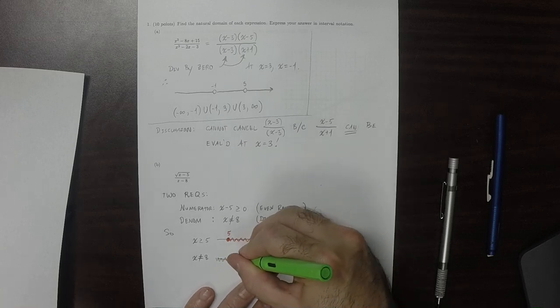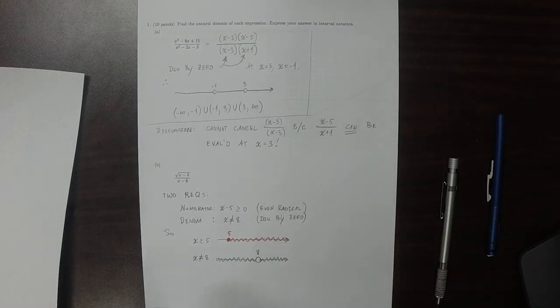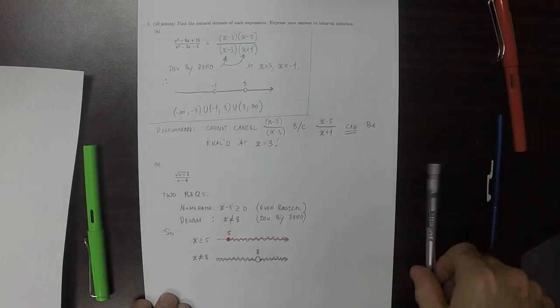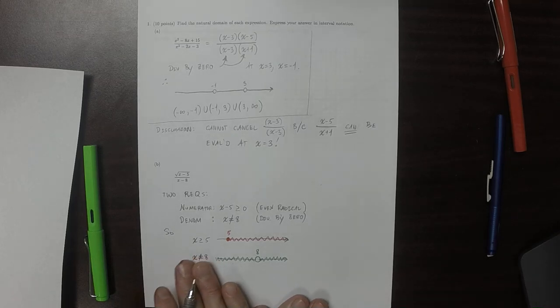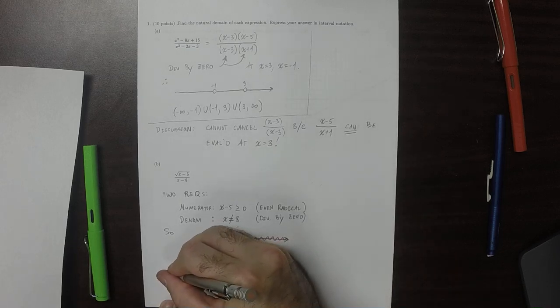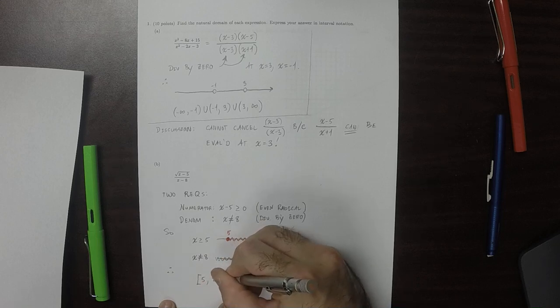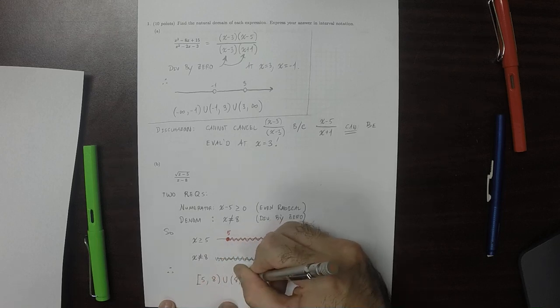Everything except that one is okay. So in order for both of these to be true, we need, in a sense, where they overlap. So the answer is 5 to 8, but not including 8, union 8 to infinity.